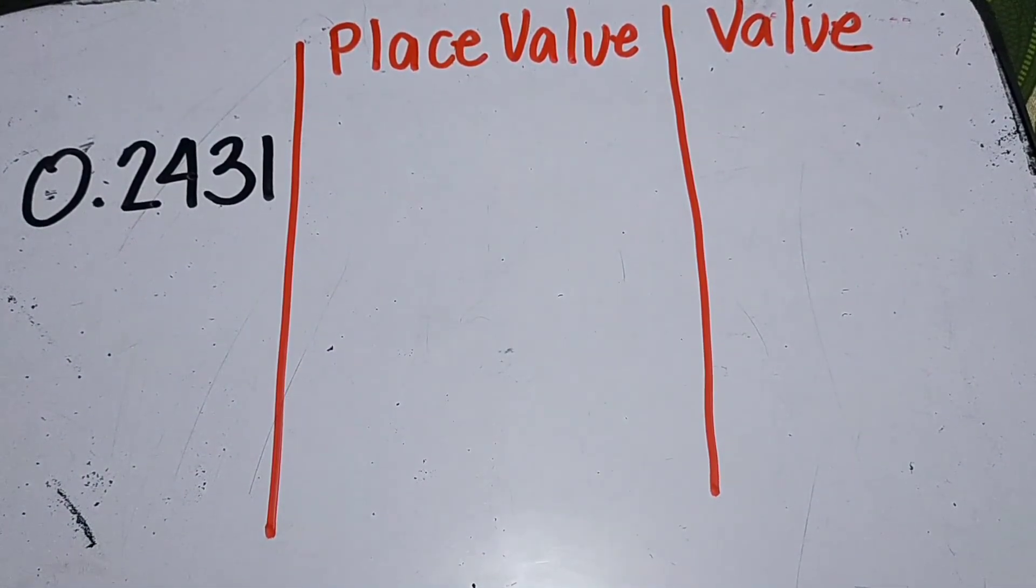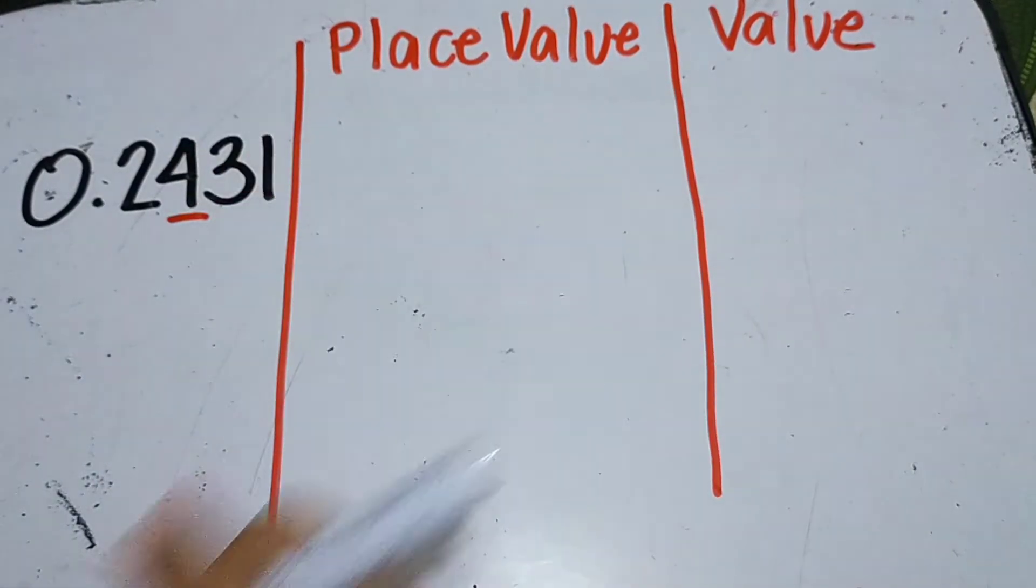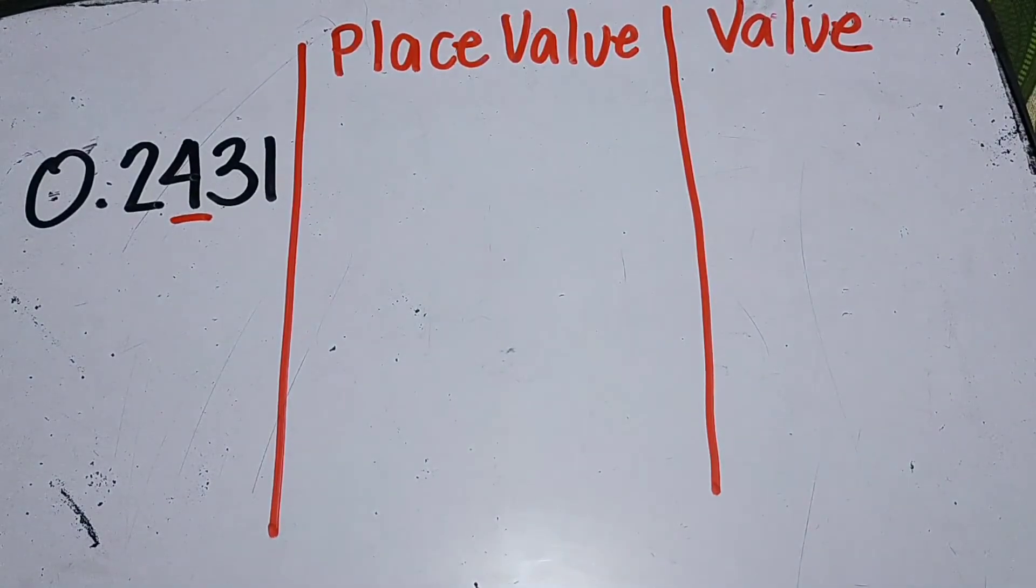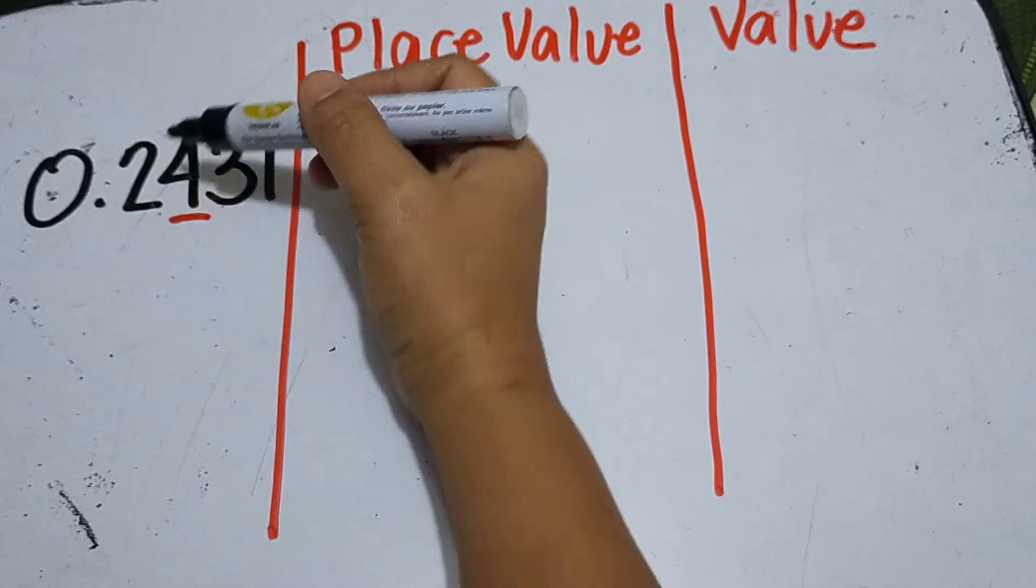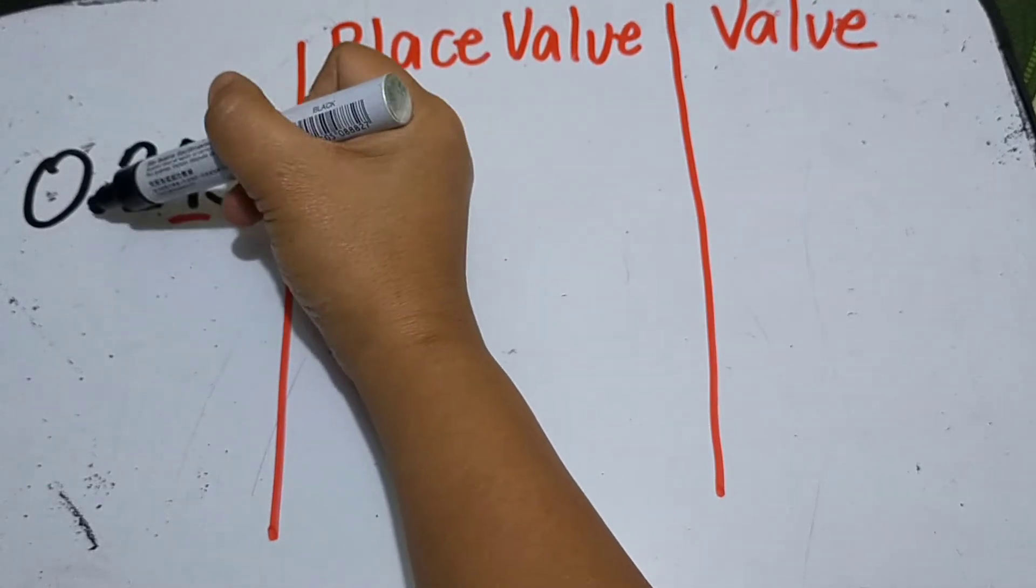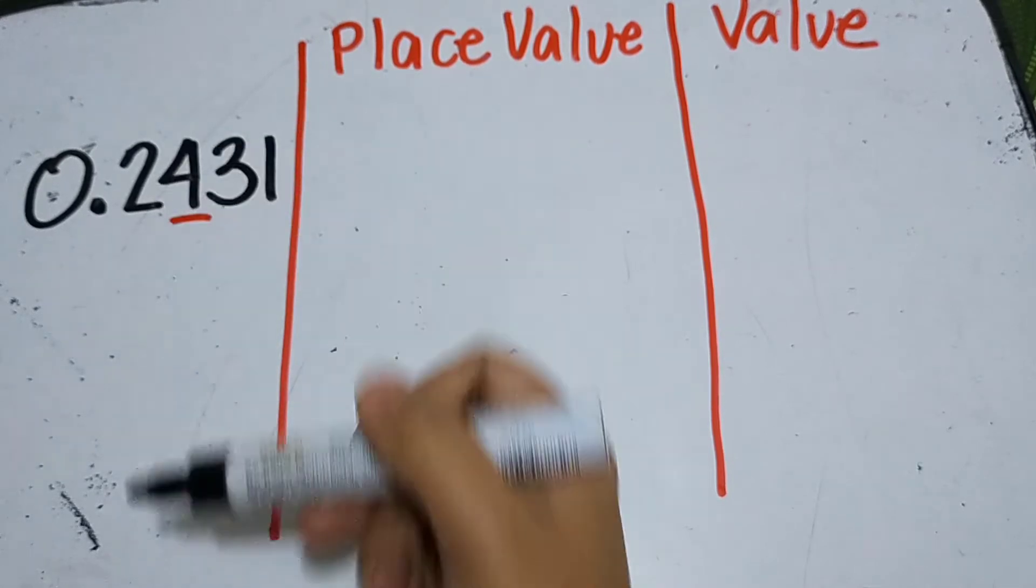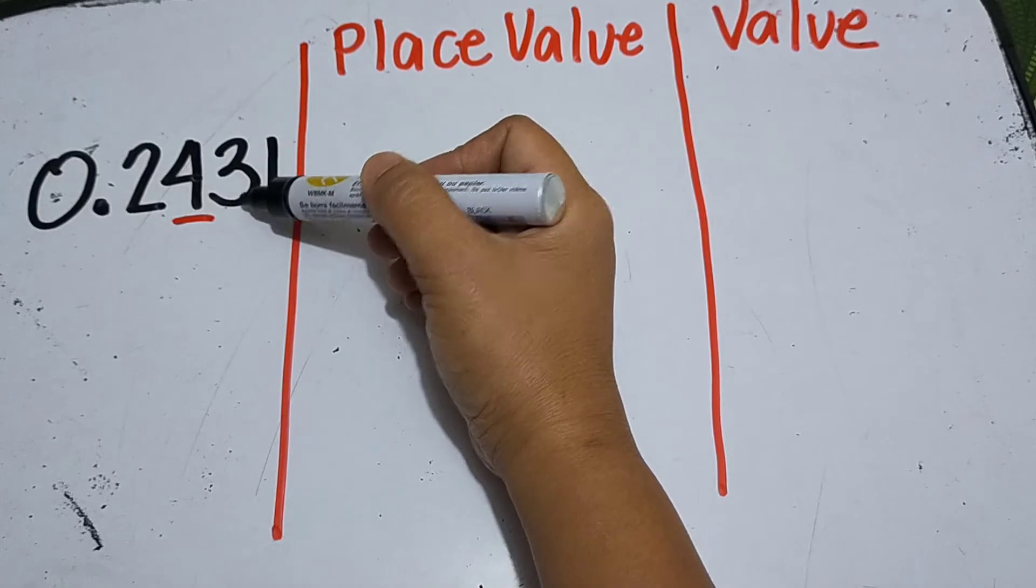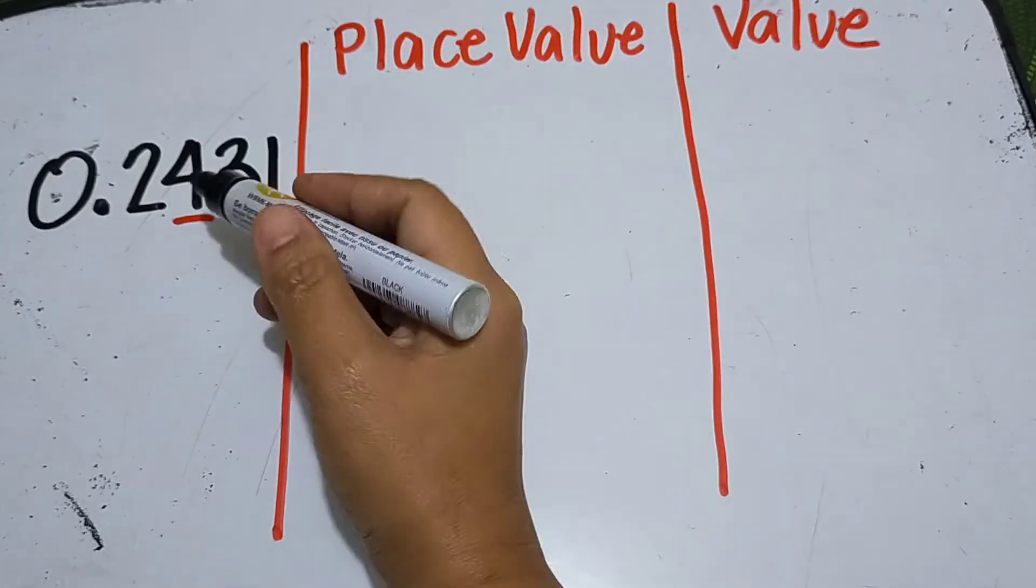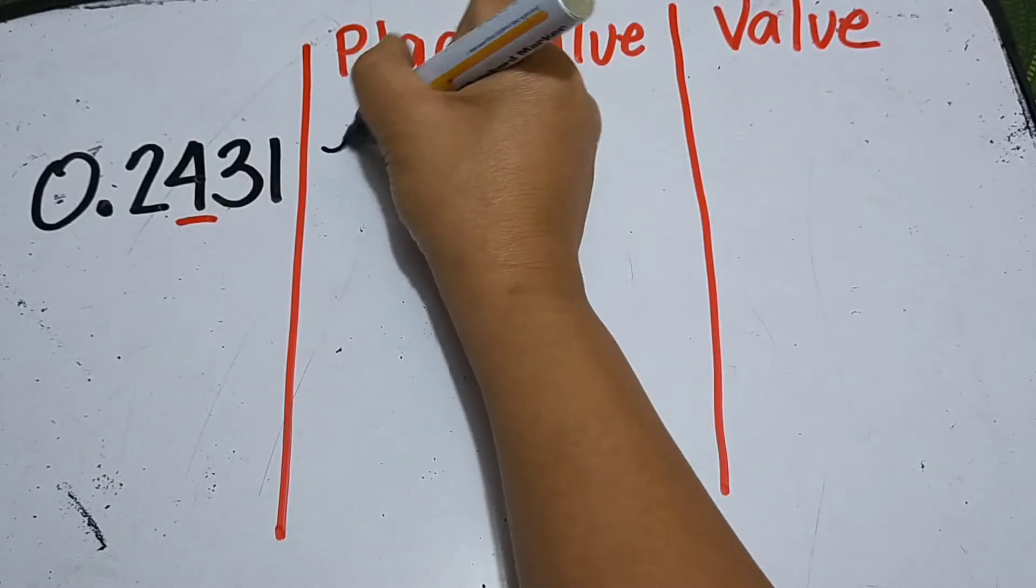So let's say you are asked to find the place value and value of this digit. Okay, so when we talk about decimal numbers, the digit to the right of the decimal point, the place value starts with tenths. So tenths, hundredths, thousandths, ten thousandths. So therefore, the place value of four is hundredths.